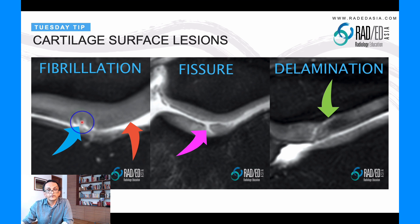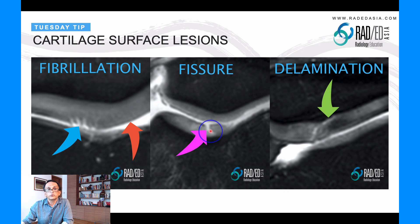As it gets more severe, we get fissuring, and fissuring is deeper. It can go either down to the cortex, or it can go to variable depths. But it's deeper and wider, and it's just a bit more substantial than surface fibrillation.